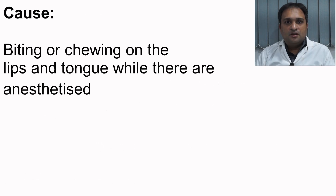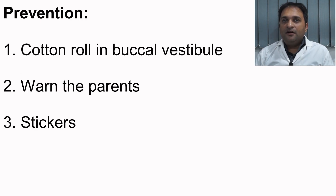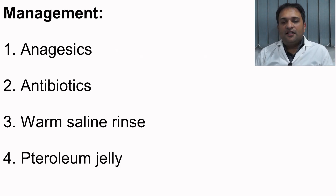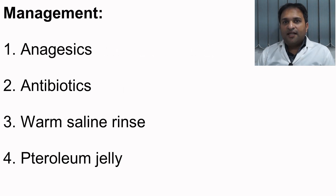Soft tissue trauma to the lip or tongue is caused by biting or chewing while anesthetized, especially in children. Prevention includes keeping a cotton roll between the lips and teeth, warning patients and their parents, and using self-adherent or warning stickers. Management is symptomatic and includes analgesia for pain, antibiotics if there is infection, warm saline rinse to decrease swelling, and petroleum jelly to cover the lesion and minimize infection.